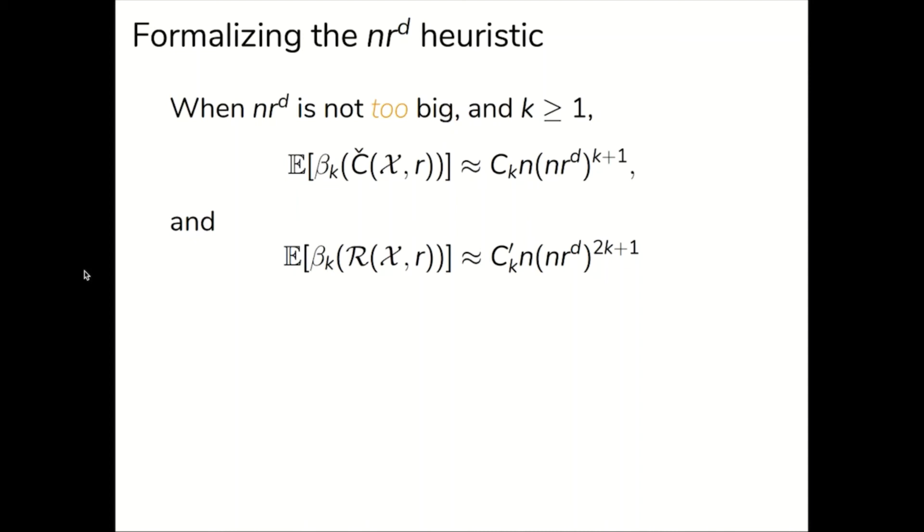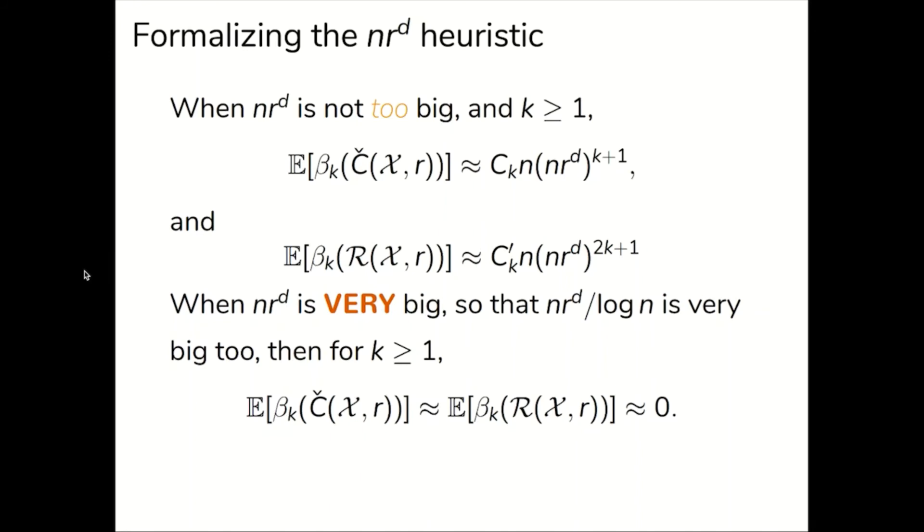That is, to form a 1 cycle in the Čech complex, you need at least three points or a triangle and can't form a 1 cycle with just an edge. Similarly, 2k plus 2 is equal to 4 and represents the least number of points to form a 1 cycle in the Vietoris-Rips complex.